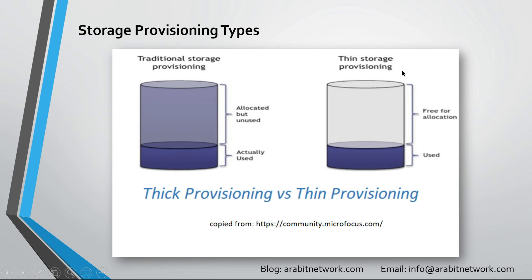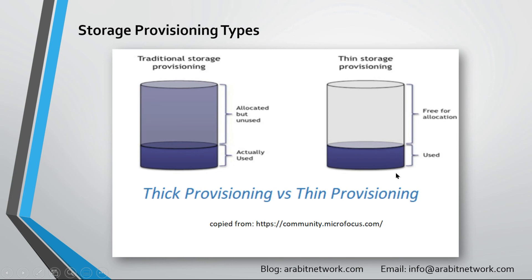Thin provisioning has one big disadvantage that could cause catastrophe, according to my experience. When it comes to overcommitment, if you provision many LUNs and volumes with logical sizes that are larger than the physical capacity of the disks, and if the servers write data to these volumes and LUNs that exceeds the actual physical capacity, then you will have an outage. The volumes and LUNs will become offline and you can no longer read or write in some cases. You'll have to either delete some volumes or LUNs, or add more physical capacity.